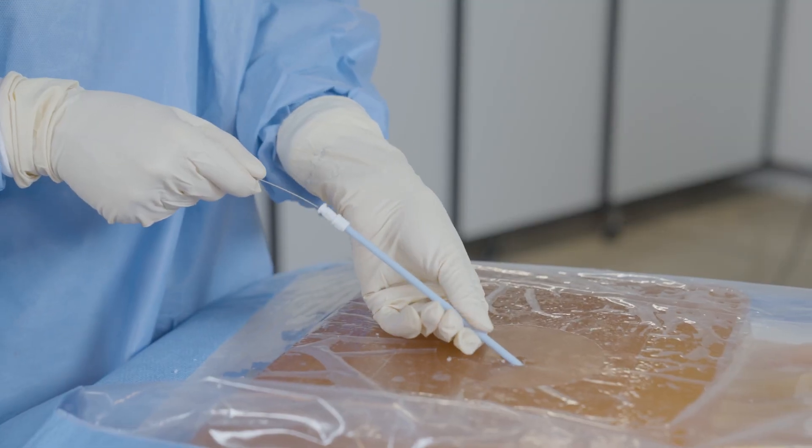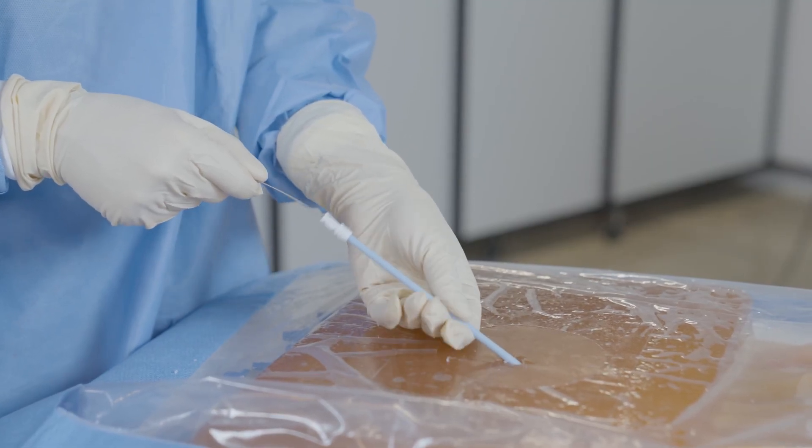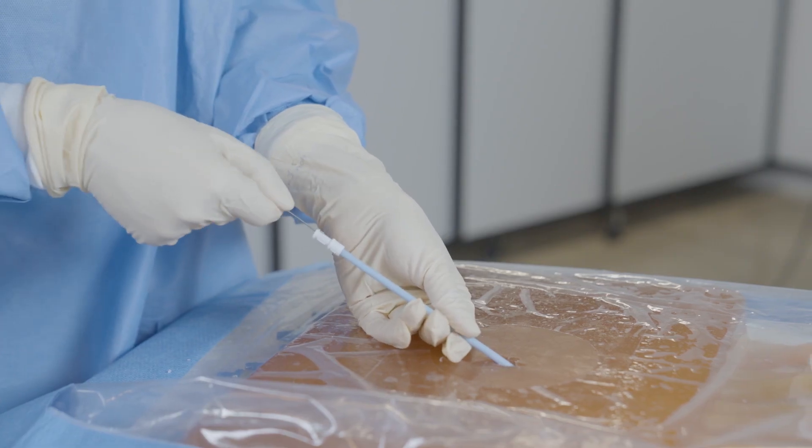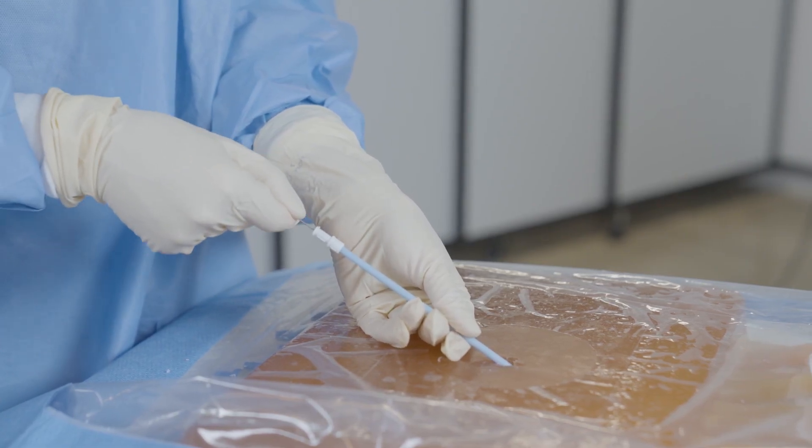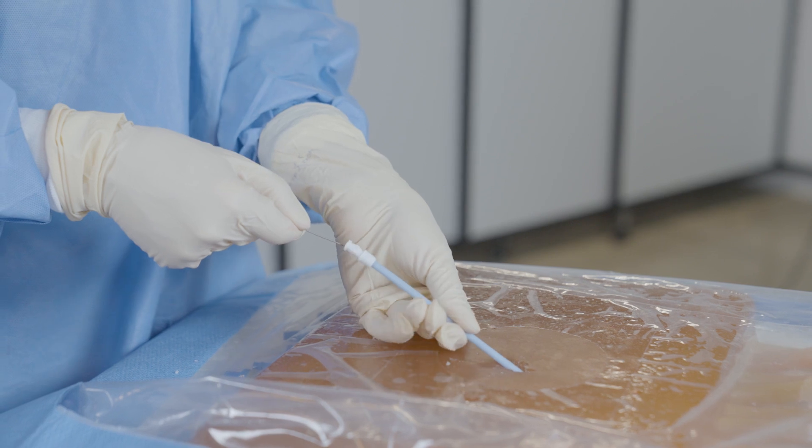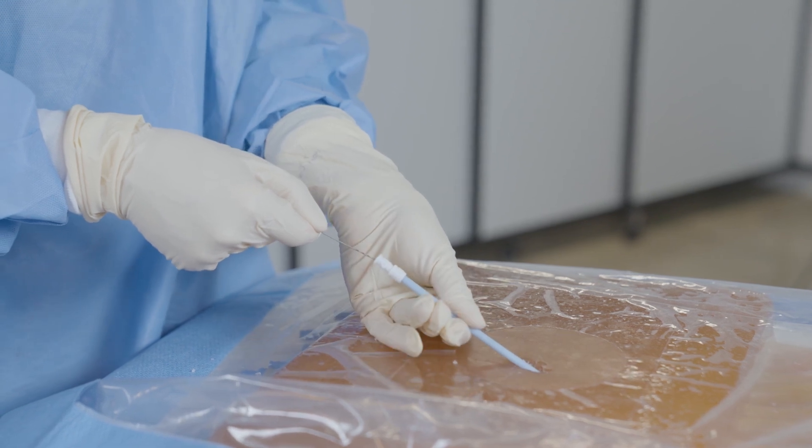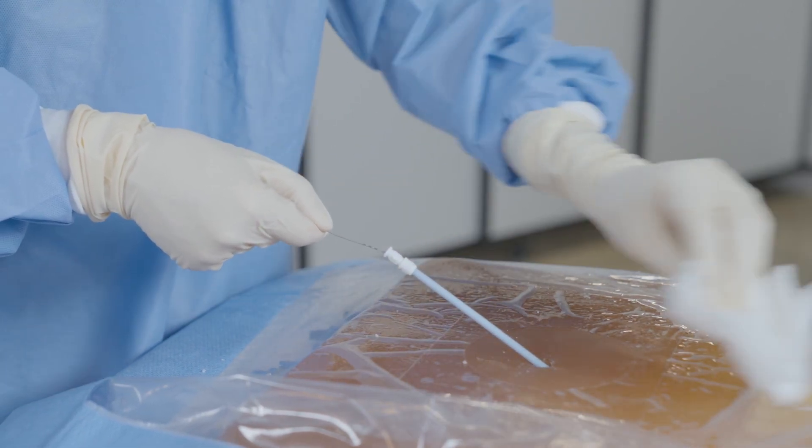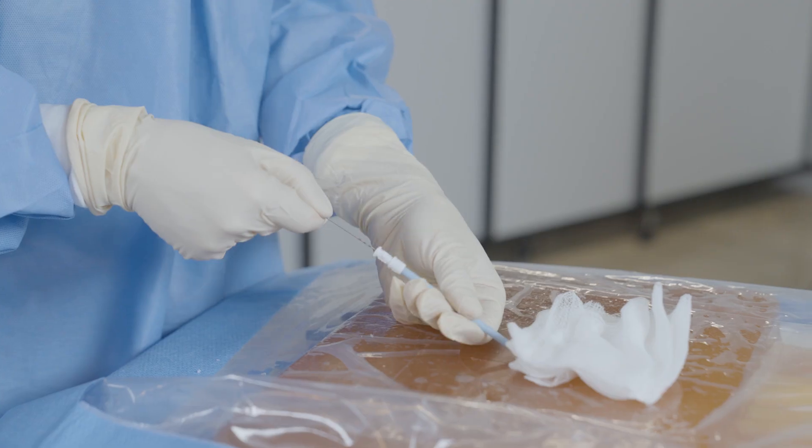Next, take the larger dilator and again rack, dilate and re-rack in the same manner as before. Remove the dilator and apply direct pressure with gauze to the insertion site as there will be significant bleeding in the area.